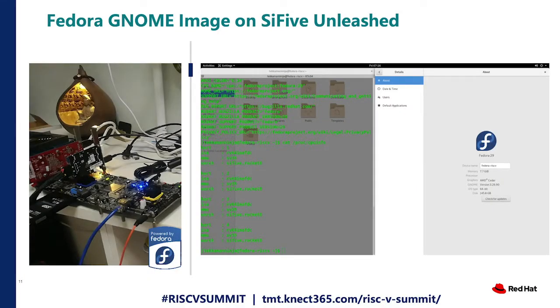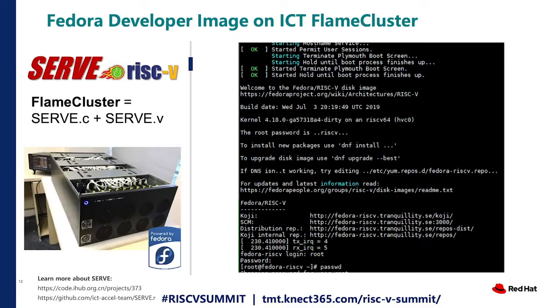Here's a picture — I have run Fedora GNOME imaging on SiFive Unleash at home. The snapshot you see here was made inside the system, not from a camera. The other picture is the ICT system, which has a cloud platform to help developers deploy RISC-V implementations, and then run Fedora on it. We have already tested these four different systems.